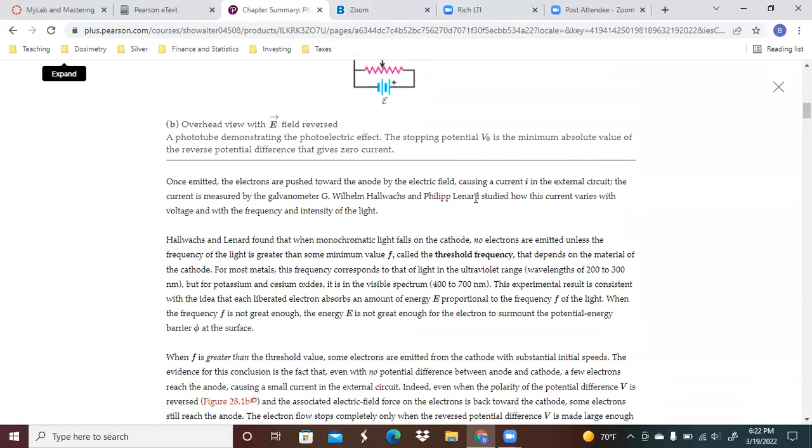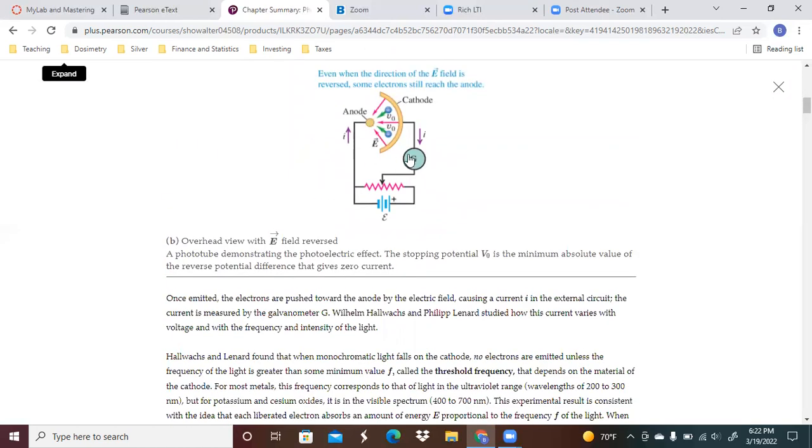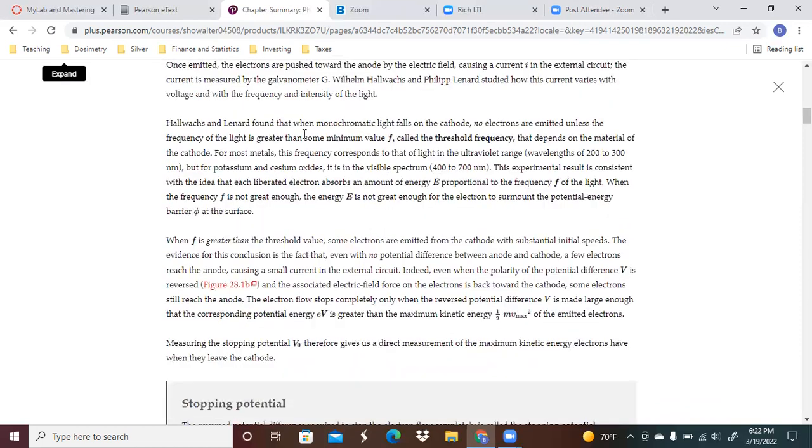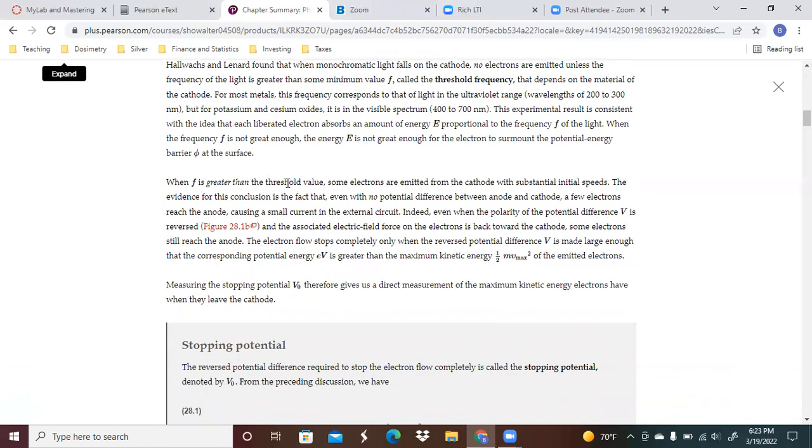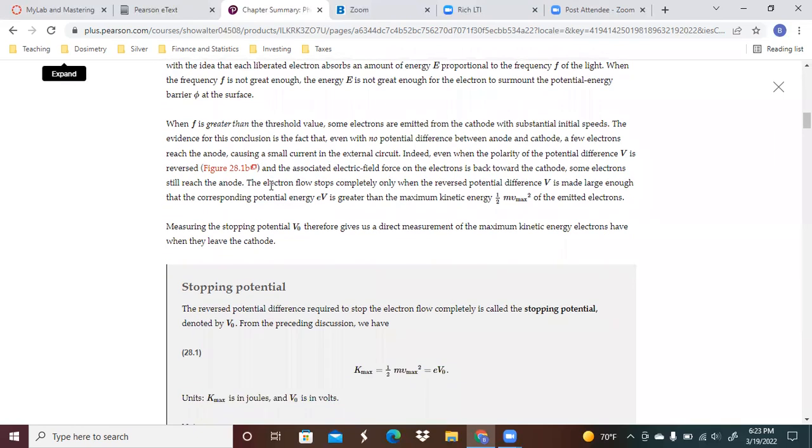Once emitted, the electrons get pushed towards the anode. It causes a current in the external circuit. The current is measured by the galvanometer. Hall-Walks and Leonard studied how this current varies with voltage and with the frequency and intensity of light. What they found was that when monochromatic light falls on the cathode, no electrons are emitted unless the frequency of the light is greater than some minimum value called the threshold frequency. And that depends on the material of the cathode. For most metals, the frequency corresponds to light in the ultraviolet range. However, for potassium or cesium oxides, it is in the visible spectrum. This experiment result is consistent with the idea that each liberated electron absorbs an amount of energy proportional to the frequency of the light. When the frequency is not great enough, the energy is not great enough for the electrons to overcome the potential energy barrier of the work function surface.